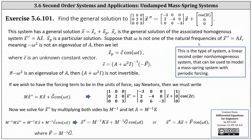Suppose that omega is not one of the natural frequencies of x double prime equals A times x, meaning negative omega squared is not an eigenvalue of matrix A. Then we let x sub p equal c times cosine omega t, where c is an unknown constant vector. We determine c by finding the inverse of the sum of A and omega squared I, times negative f. If negative omega squared is an eigenvalue of matrix A, then A plus omega squared I is not invertible, and we cannot use this form for x sub p.